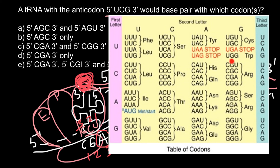Different sequences of the codon — CGU, CGC, CGA, or CGG — all four specify the same amino acid. This is possible because the third position, called the wobble position, can be different. The same tRNA can attach to any of these sequences and bring the same amino acid. So the correct answer is answer C.